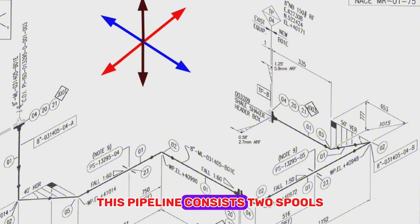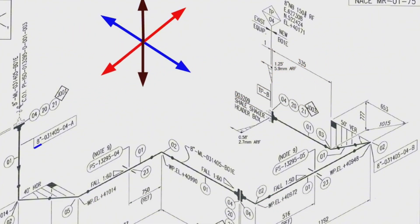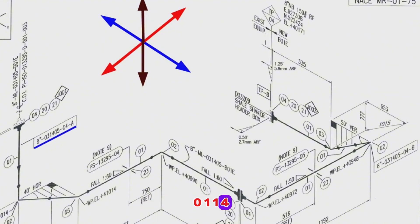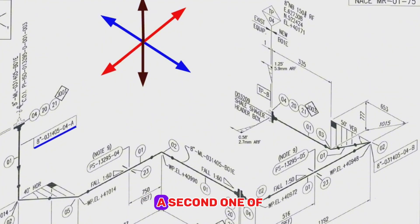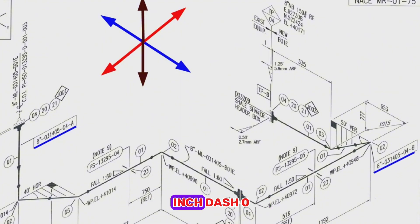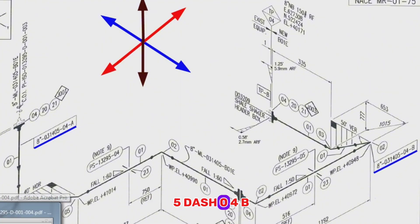This pipeline consists of two spools. One of them has the number 8-inch-011405-04A, and the second one has the number 8-inch-011405-04B.